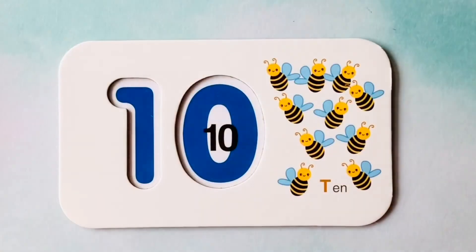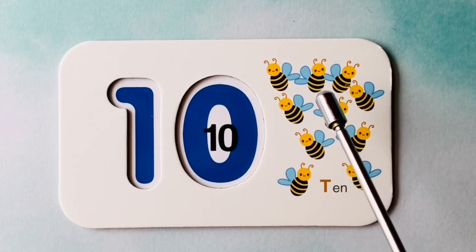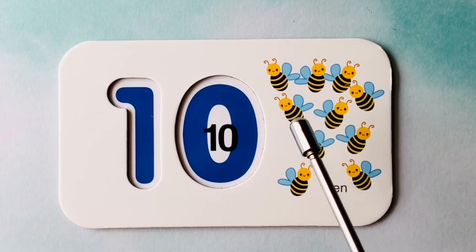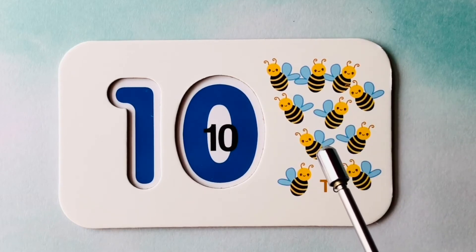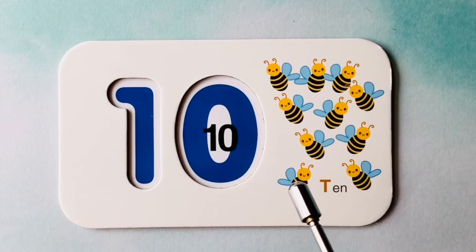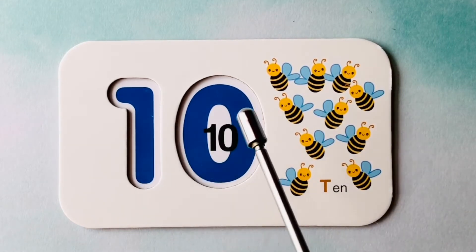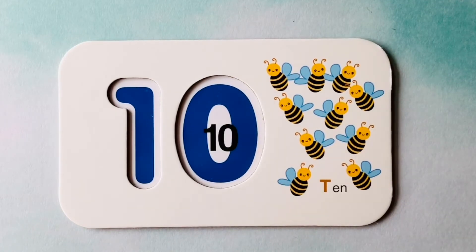How many bees do you see? I see one, two, three, four, five, six, seven, eight, nine, ten bees. This is the number ten. Great job.